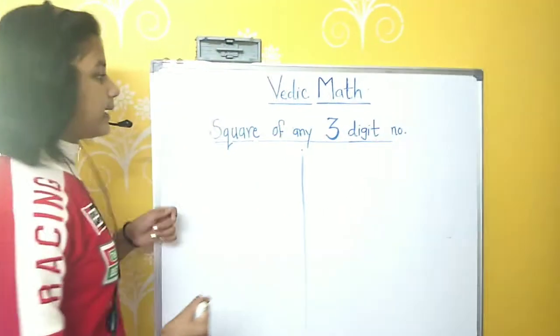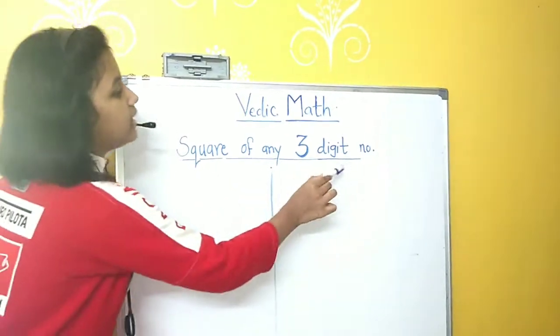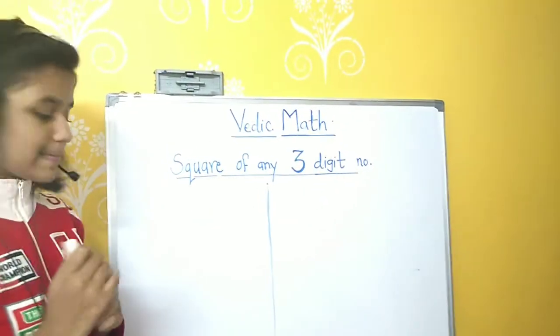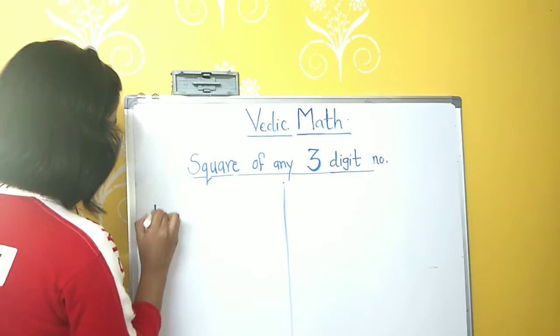So, let's move on to a topic. Today's topic is square of any three-digit number. So, let's take an example.